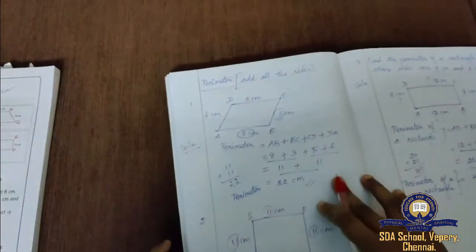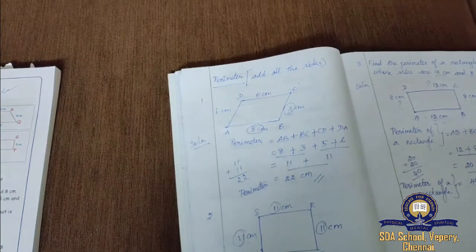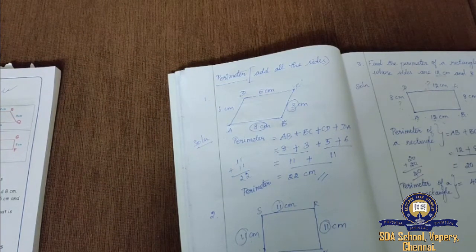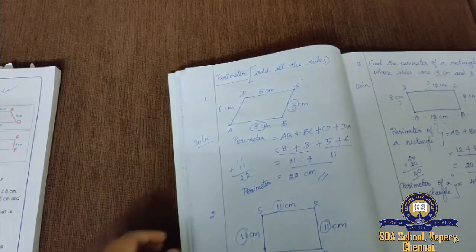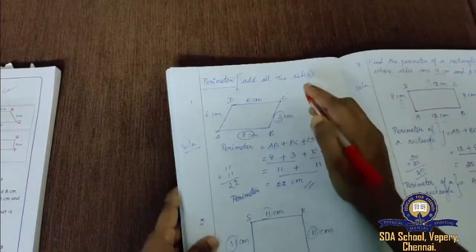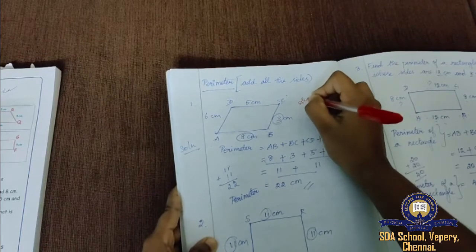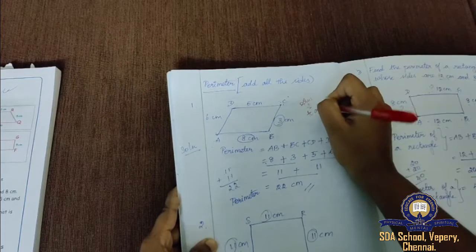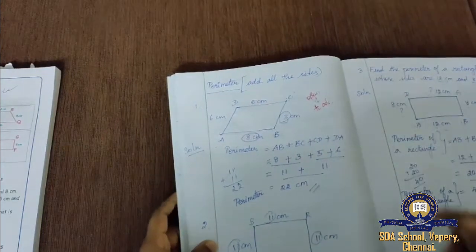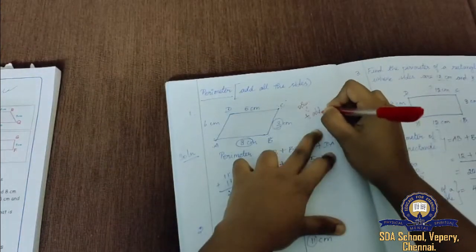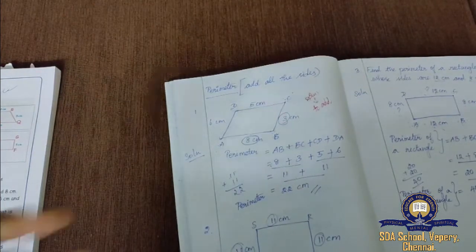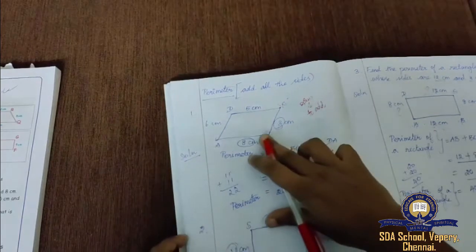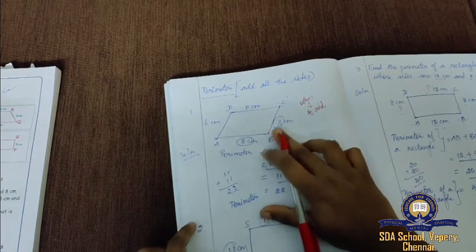Next, we discussed perimeter. The sum of all sides of a closed figure is known as the perimeter — sum means to add. We are given this diagram, which is a parallelogram.